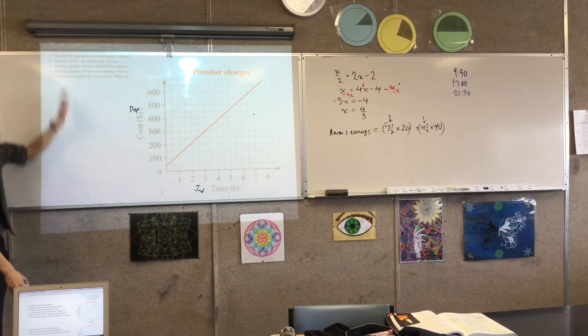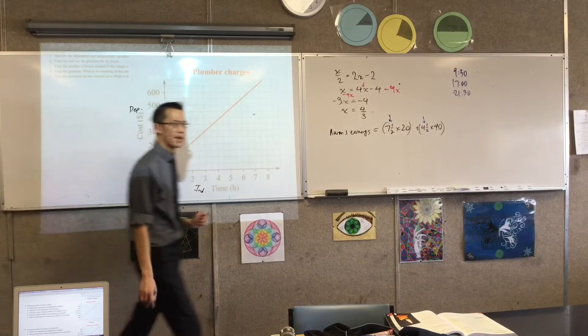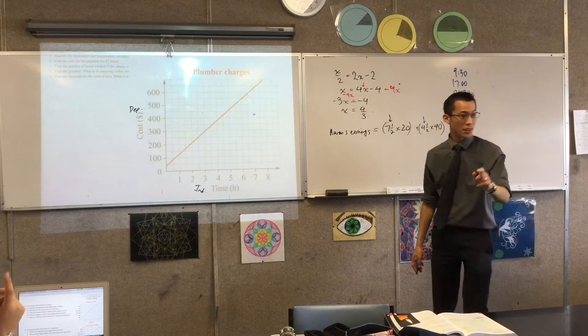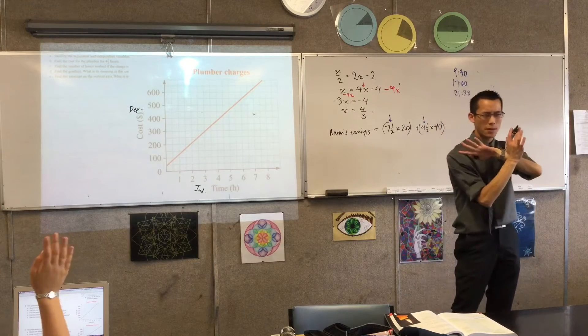Okay, that's pretty straightforward. Find the cost for the plumber for four and a half hours. So, where am I going to go? Where am I going to look on this graph? Use some language. Think about it. We have language for this. I've got two axes. Which one am I interested in?